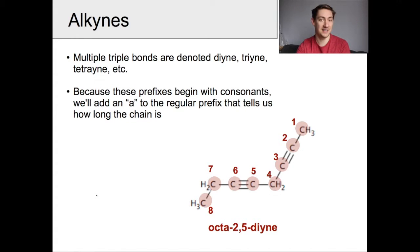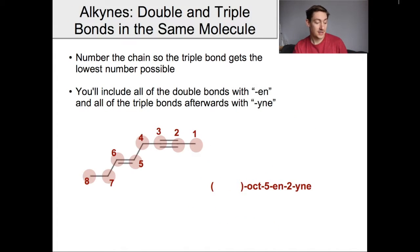Because diyne starts with a consonant, we're going to include an A to make it octa-diyne, simply because those are the rules. And I think supposedly it rolls off the tongue better to say octa-diyne than just oct-diyne, although you do need to give us where the numbers are.